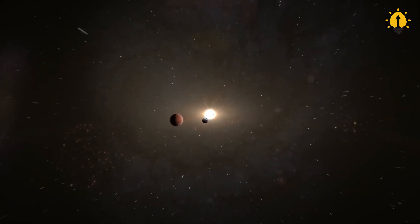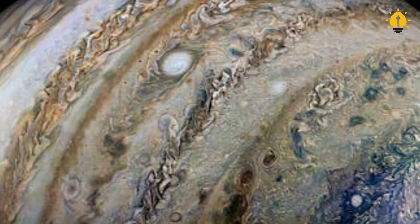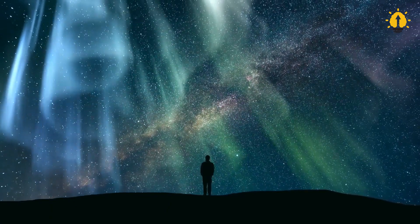These eight celestial bodies, namely Mercury, Venus, Earth, Mars, Jupiter, Saturn, Uranus, and Neptune, have been a staple in our understanding of our place in the cosmos for decades.